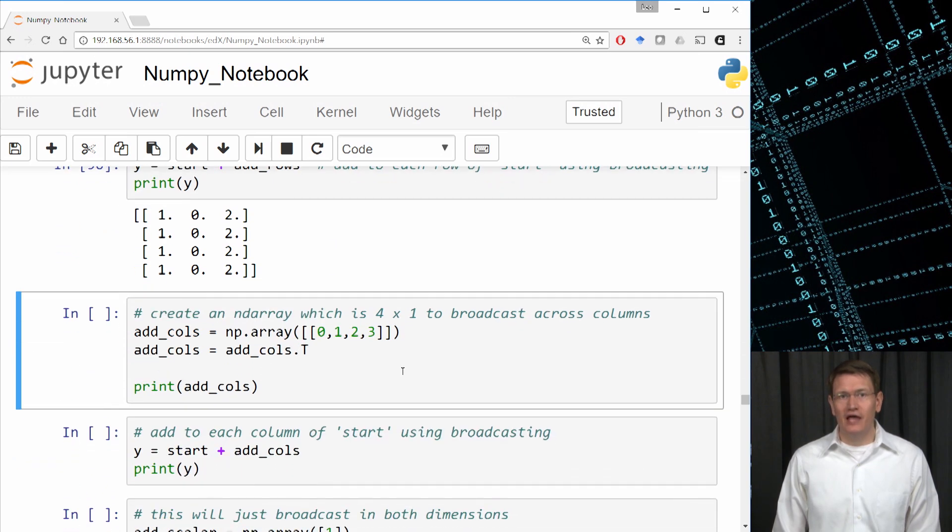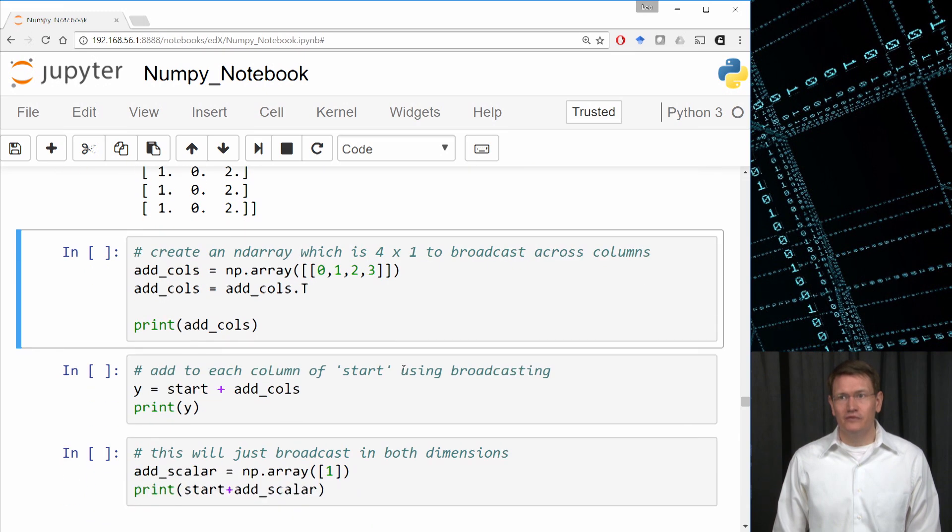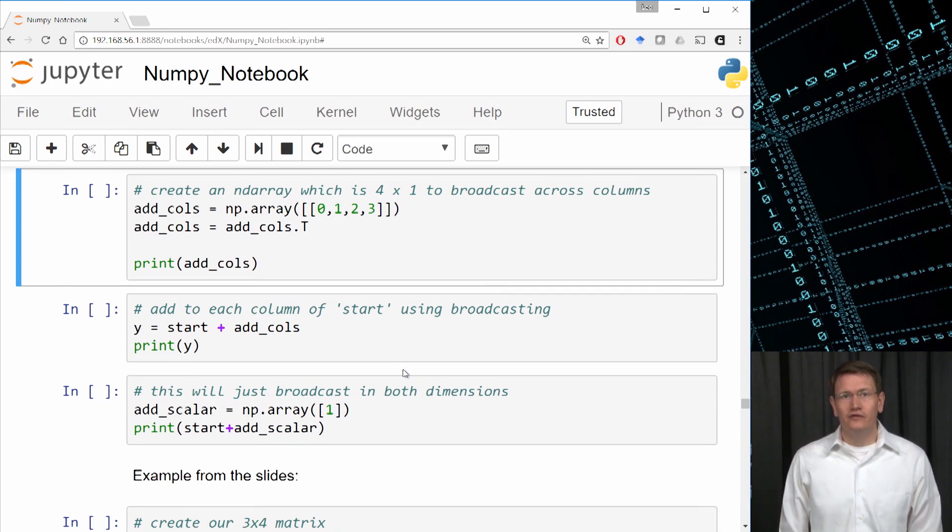Let's do the same thing, except we'll add to each column this time. To do that, I'll need a 4x1 array, which I'll build as a 1x4 array, and then just use a transpose on it, denoted by T.